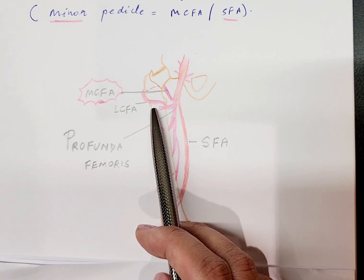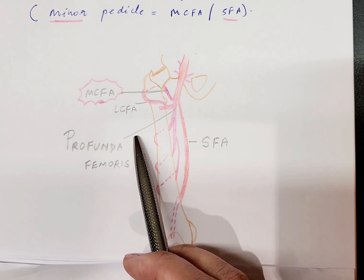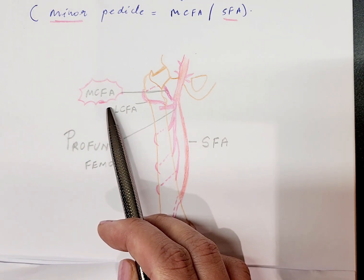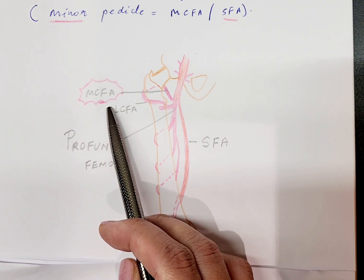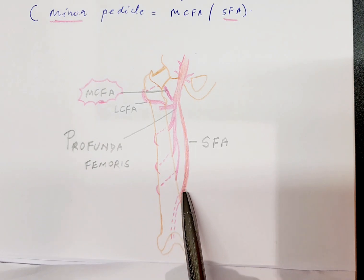For now, the profunda femoris, which gives off the MCFA, is the vascularity which we should remember because it is supplying the gracilis muscle and hence our flap. The superficial femoral artery, which is a continuation of the femoral artery in the thigh, is also going to give some of the minor pedicles to the gracilis muscle.